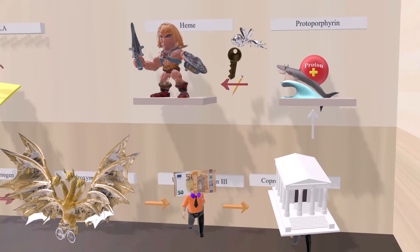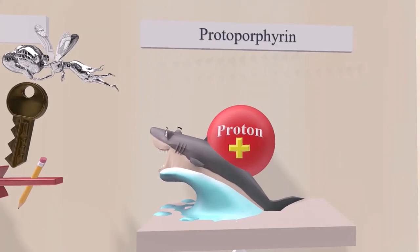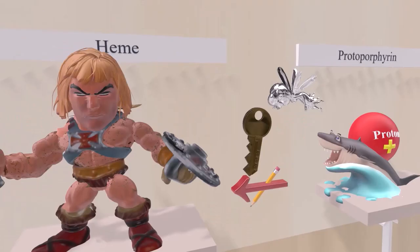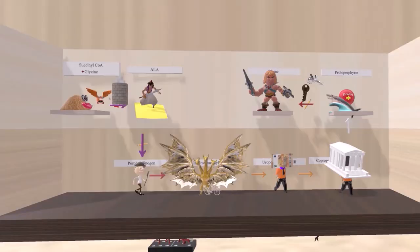Coproporphyrinogen III is converted to a shark with a proton as a fin — 'proton fin' for protoporphyrin — the next substrate in heme synthesis. Protoporphyrin then combines with iron to produce heme. The iron fairy with keys — 'fairy key' for ferrochelatase — reminds us that the enzyme responsible for this final conversion is ferrochelatase. Again, the lead pencil appears, reminding us that lead also inhibits this step.